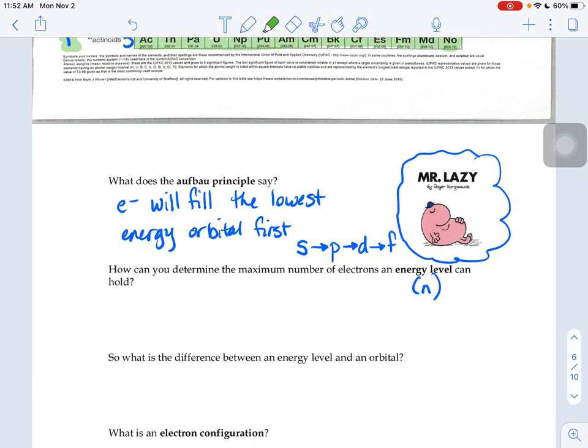And it says, how could we figure out the maximum number of electrons an energy level can hold? There's a little formula for 2N squared. So what that means, if you are in the first energy level, if you are in the level of the atom that's closest to the nucleus, we're going to plug in the number 1 into that equation. Well, 1 squared is 1 times 2 is 2.